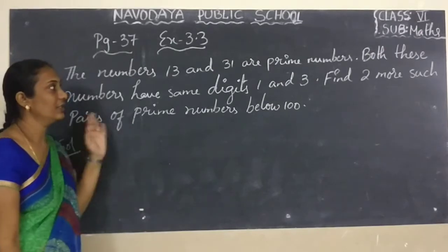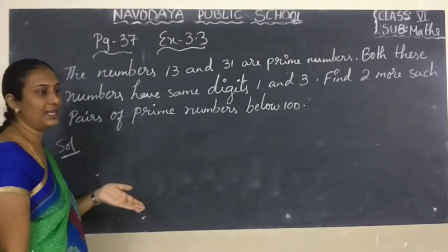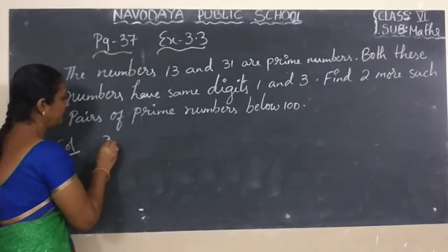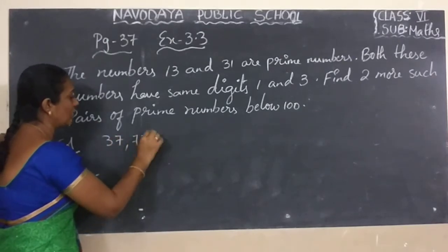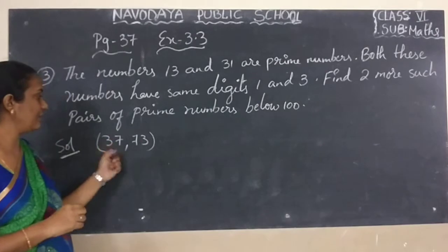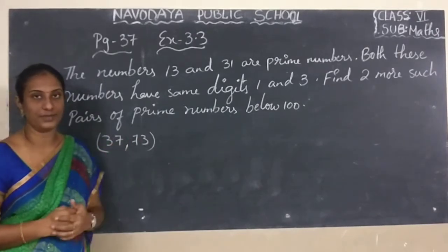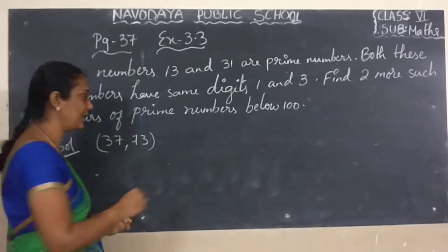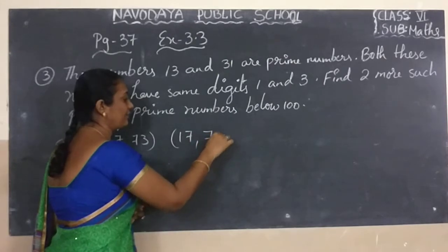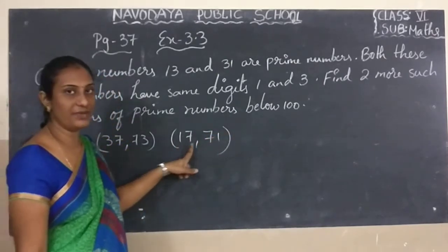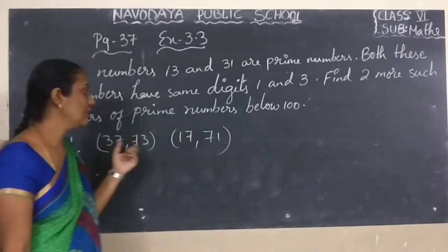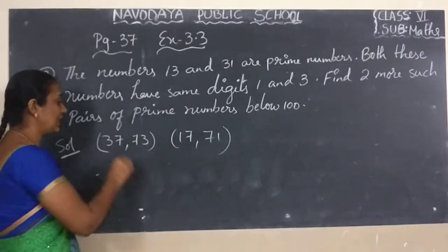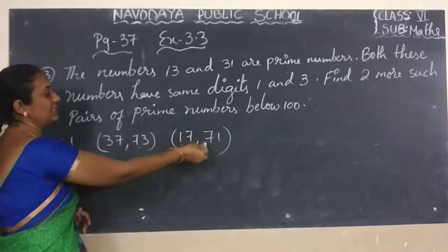Now see — 37 and 73. 37 is a prime number and 73 is also a prime number. When you reverse the numbers, we get 7 and 3 numbers only. Same process: 17 and 71. So when you are reversing the same numbers, we are getting the same digits: 37, 73, 17, 71.